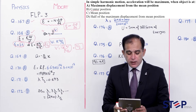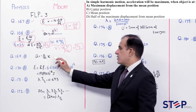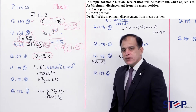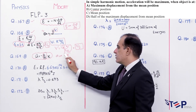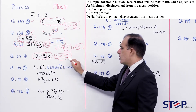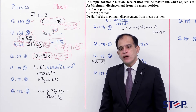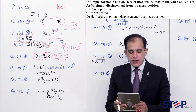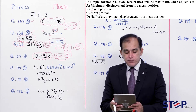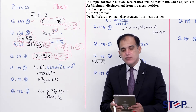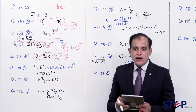Question number 169: In simple harmonic motion, acceleration is maximum when. a = -(k/m)x. Acceleration is directly proportional to displacement (magnitude). Maximum acceleration when displacement is maximum, i.e., at amplitude (maximum displacement from mean position). Correct option: Alpha.